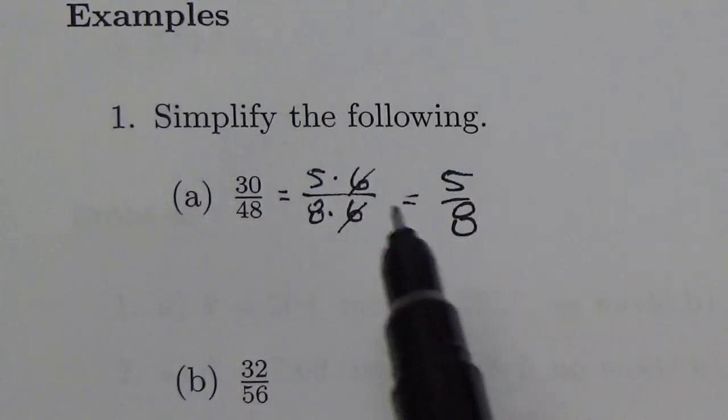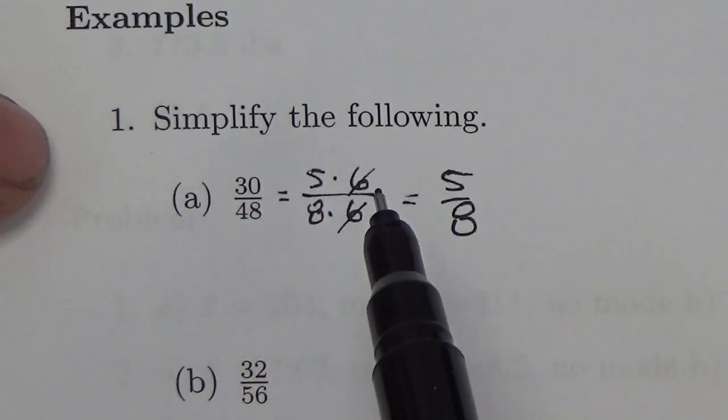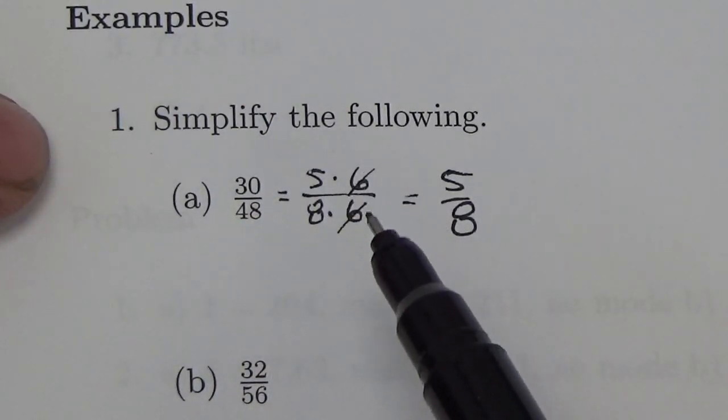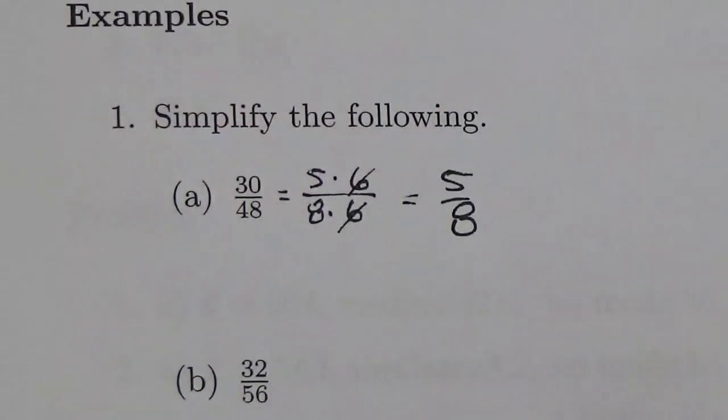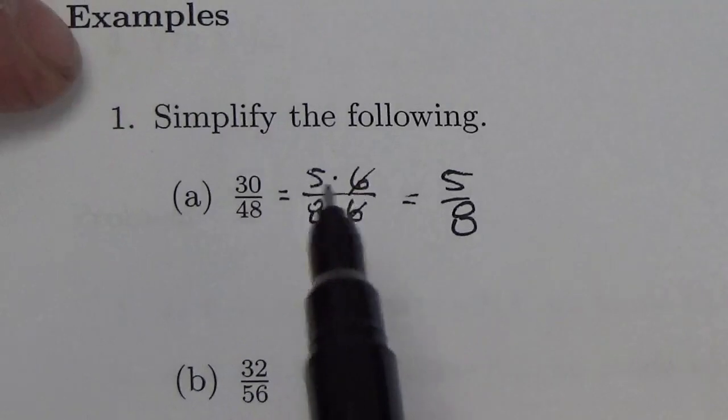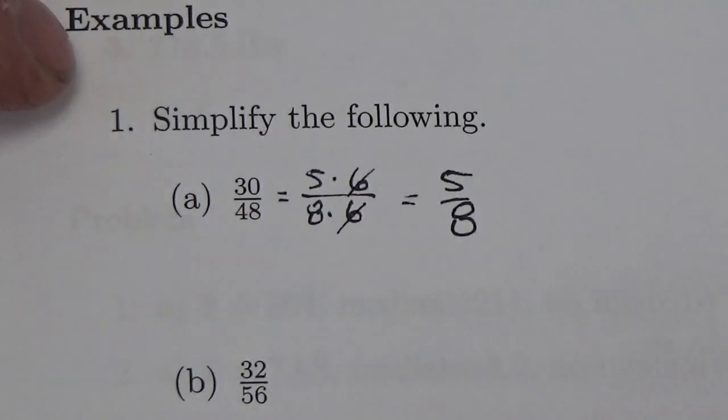That's what we mean. Basically, we're looking for factors that the numerator and denominator have in common. And then we're going to do the division between those and convert those into 1. And then whatever we're left with, that's the simplified form.